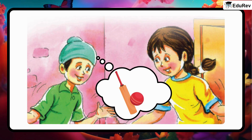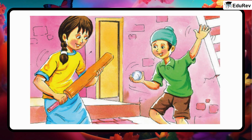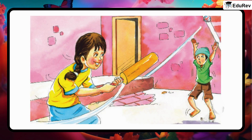After some time, Bubbly and Jeet decided to play bat and ball. Jeet got ready to throw the ball. Jeet threw the ball. Bubbly hit the ball. The ball went into Mohit's garden.